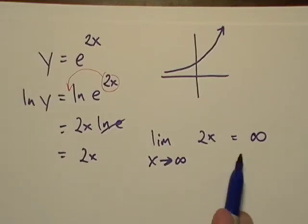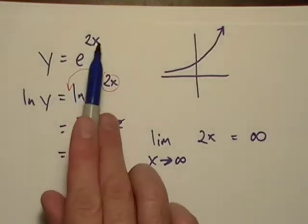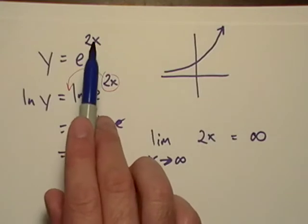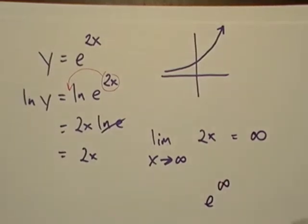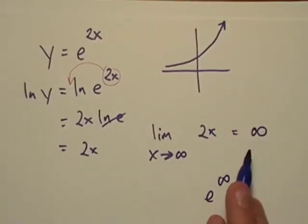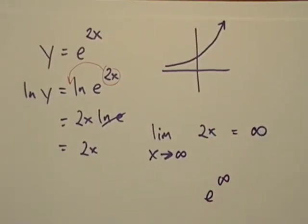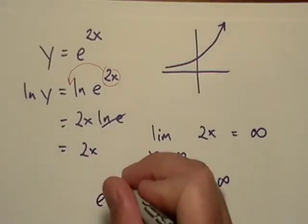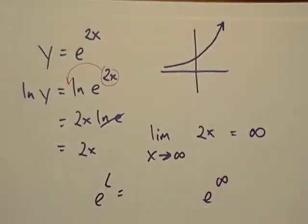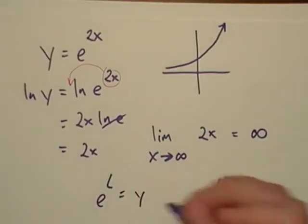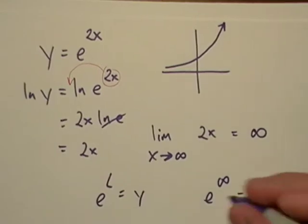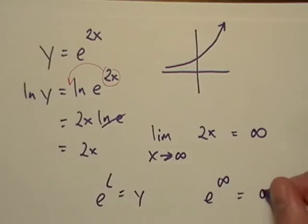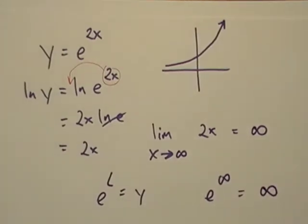So what we would do is we just calculate the limit of, in this case, the exponent. And then the limit, basically, we'll just raise E to whatever the limit is. So you could say that E to the L is where Y goes long term. And in this case, E multiplied by itself in an infinite amount of times does yield an infinite limit.